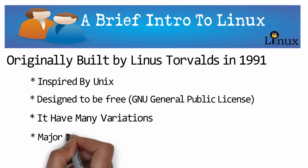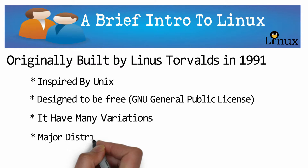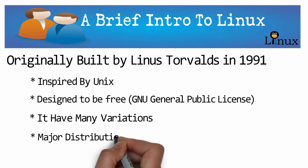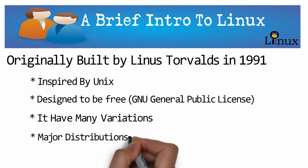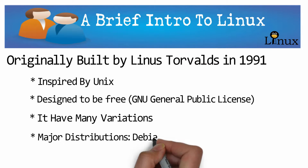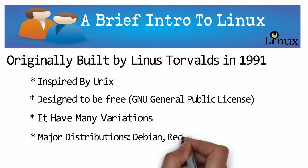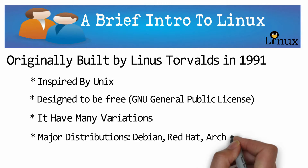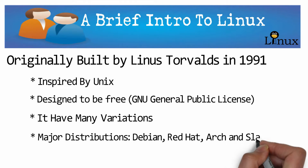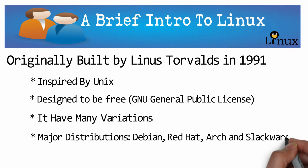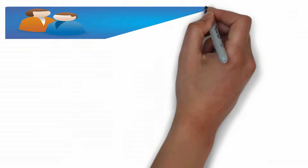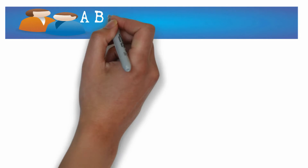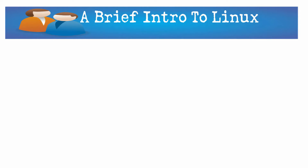One of the most important distinctions to be aware of is that most major distributions of Linux fall into four categories based on the original distribution from which they derived: Debian, Red Hat, Arch, and Slackware, along with any number of smaller distributions.